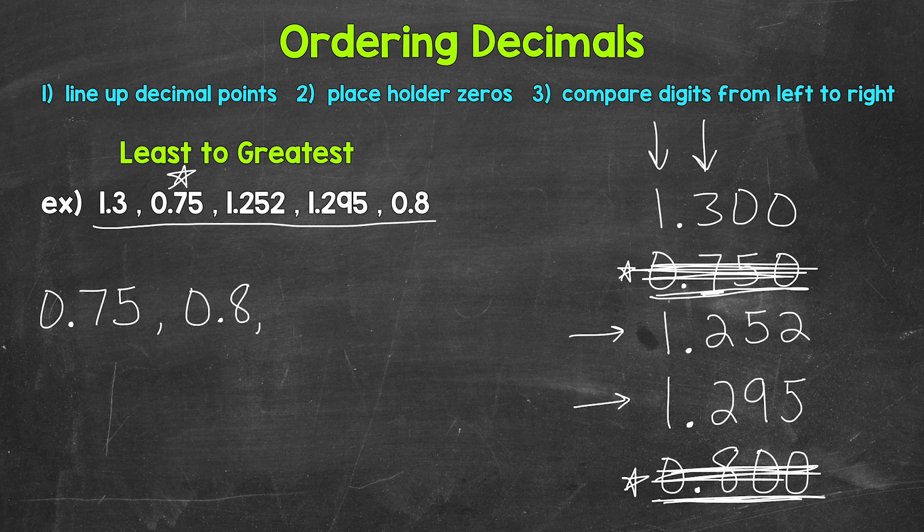Let's continue on. Looking at the ones place, we have all ones now. So we can move over to the tenths place. We have three, two, and two. Those twos are less than three.